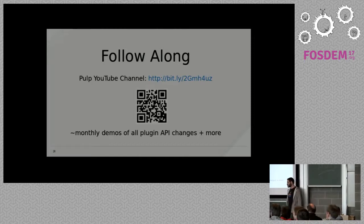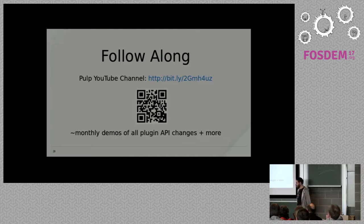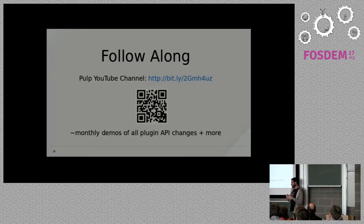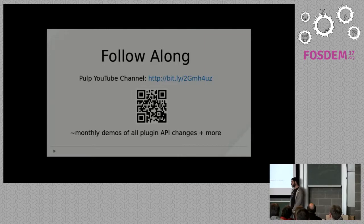Question: If you publish a Python package, can you also publish it to Pulp using pip — is there anything planned around that? The question is whether Pulp plans to support uploading content using APIs similar to PyPI, or directly from pip. I believe on the Python plugin's roadmap there is a use case that covers that.